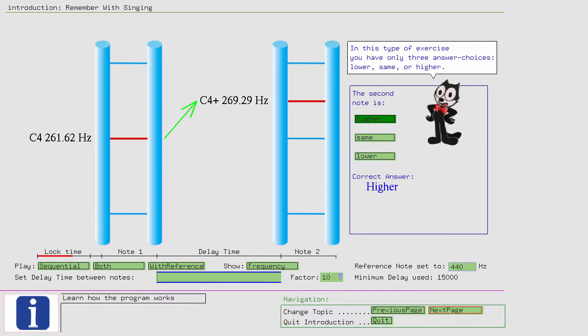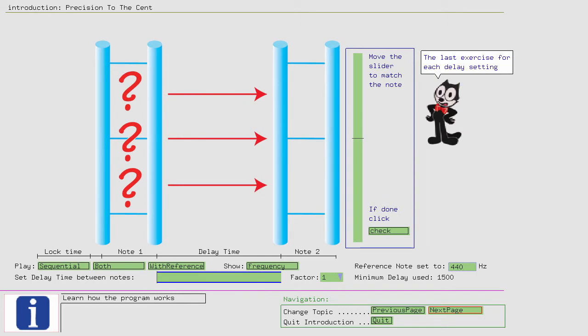In this type of exercise, you have only three answer choices: lower, same, or higher. In the type of the next exercise, you have to identify the challenge to the cent. The last exercise for each delay setting is called match the pitch.